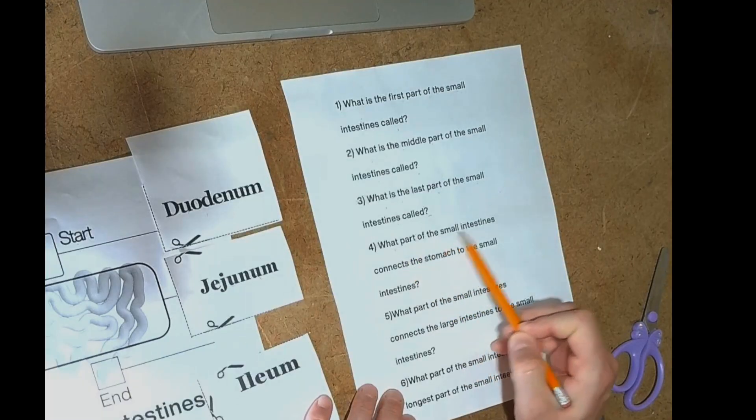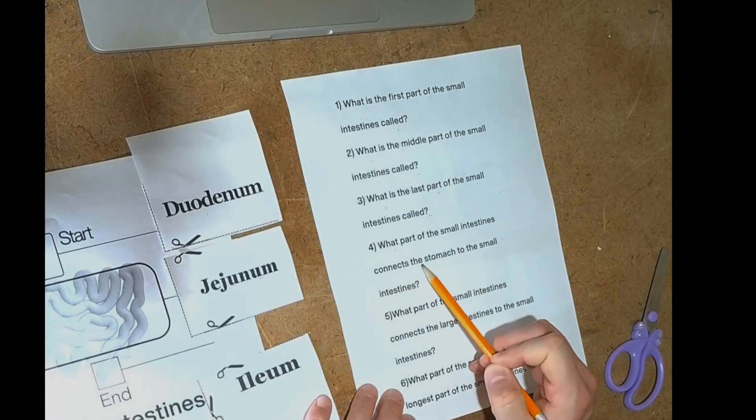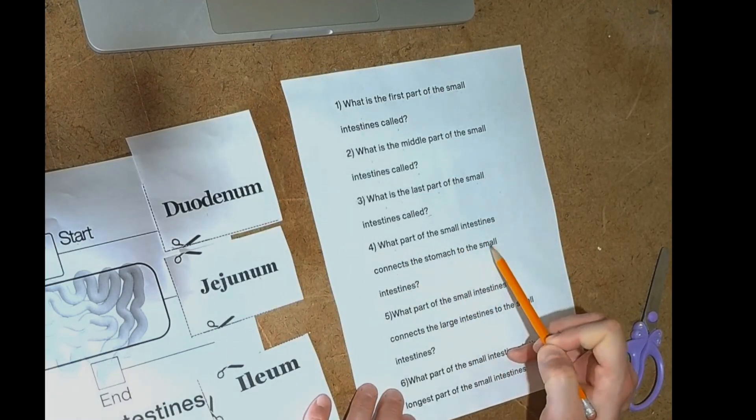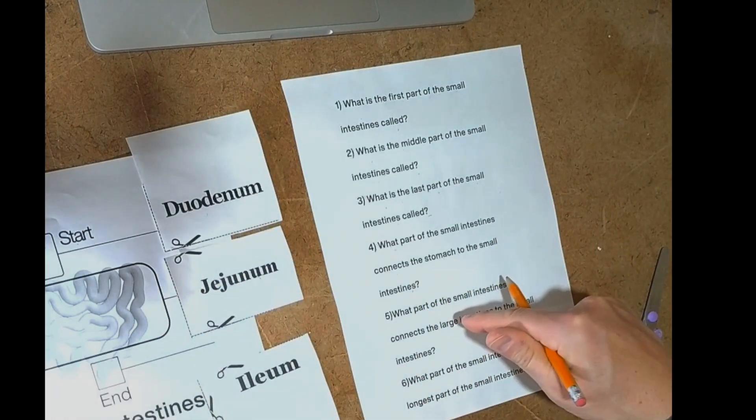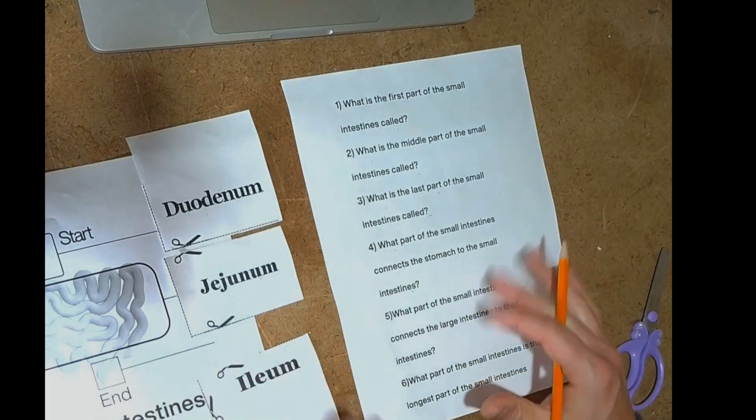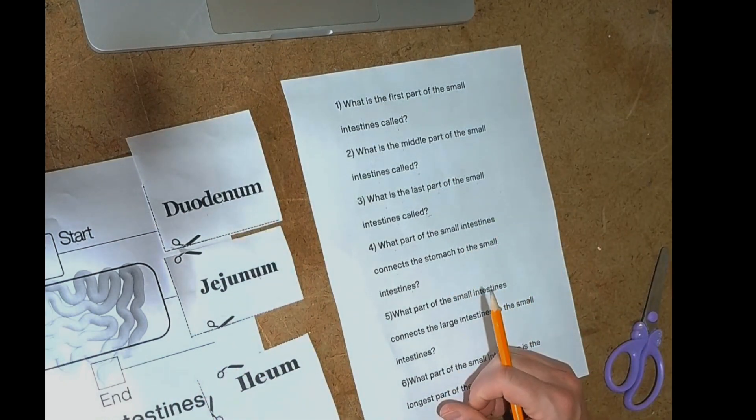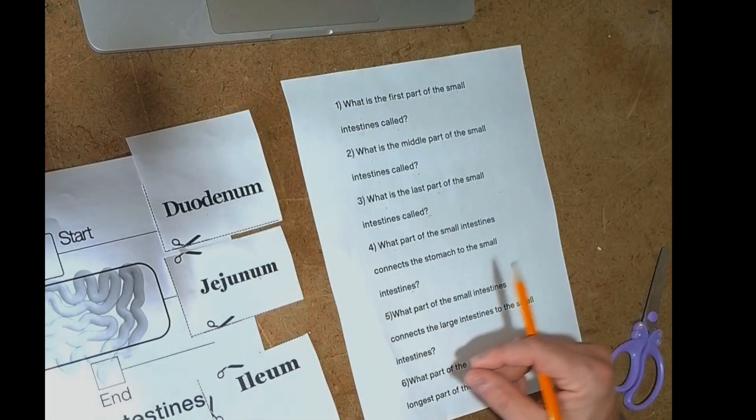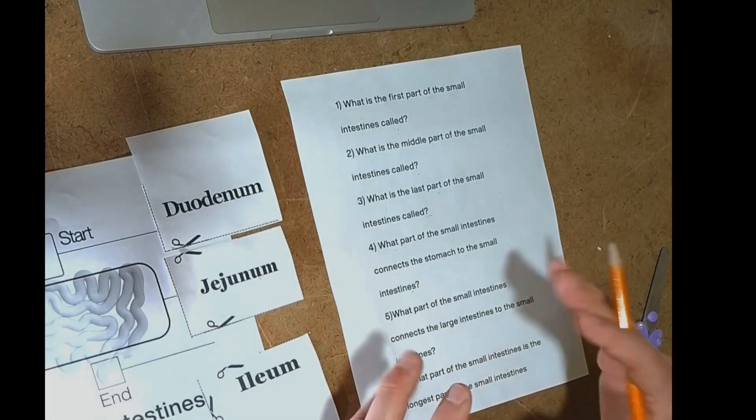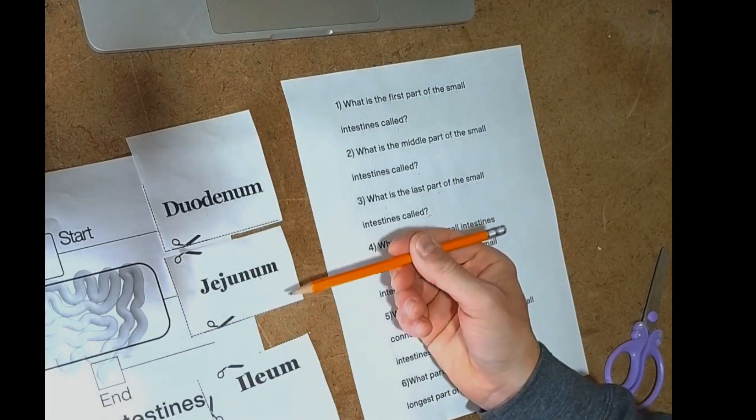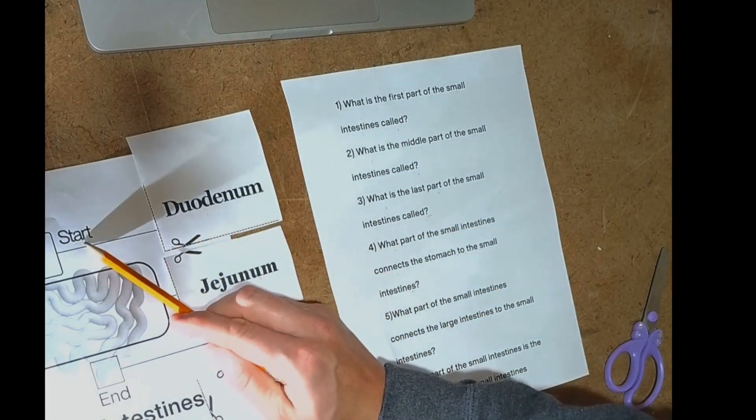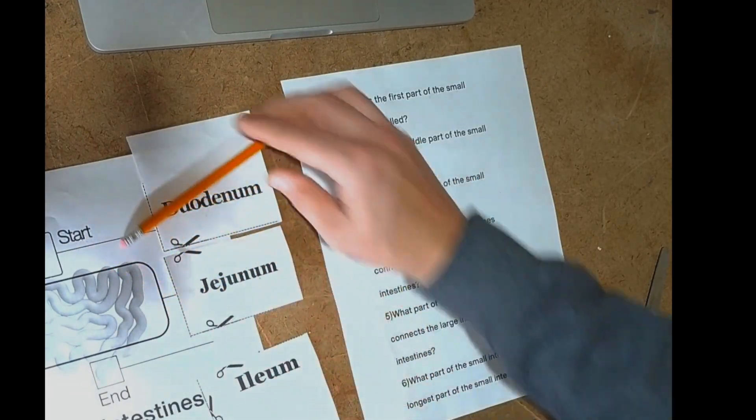What part of the small intestines connects the stomach to the small intestines? So remember, the stomach comes first before the small intestines. So if the stomach comes before the small intestines, what will be the first part that connects the small intestines to the stomach? At the start, it's going to be the duodenum.